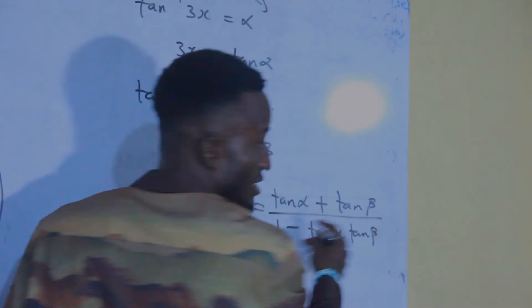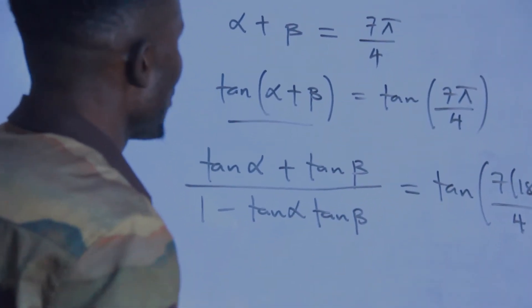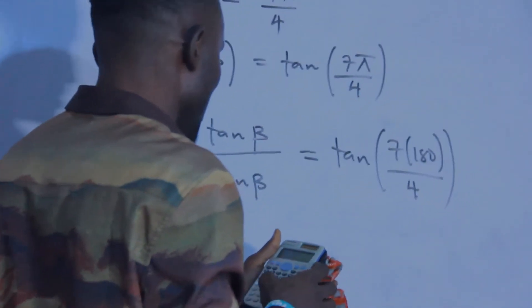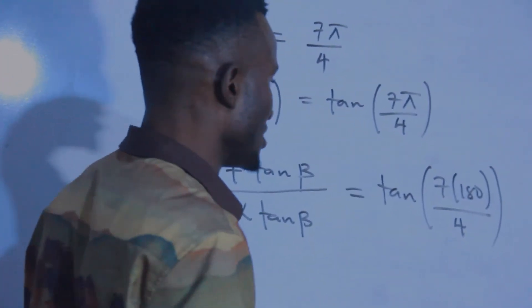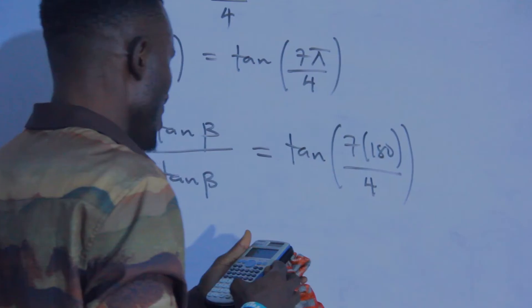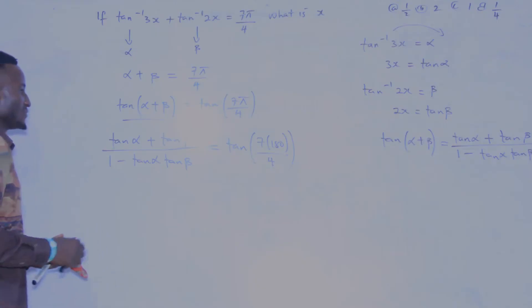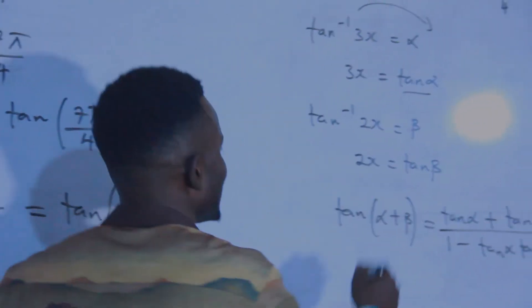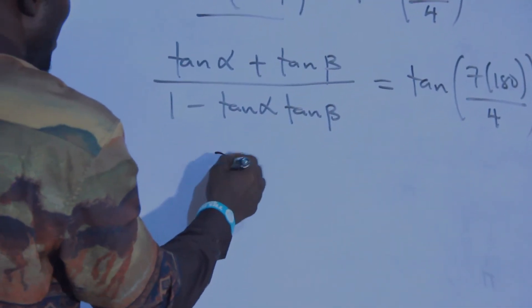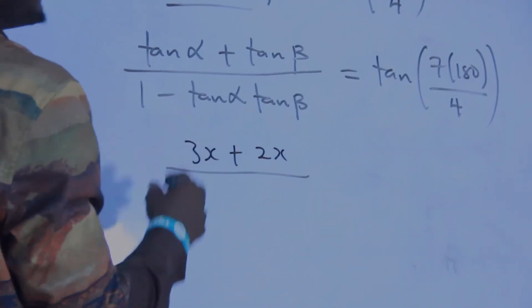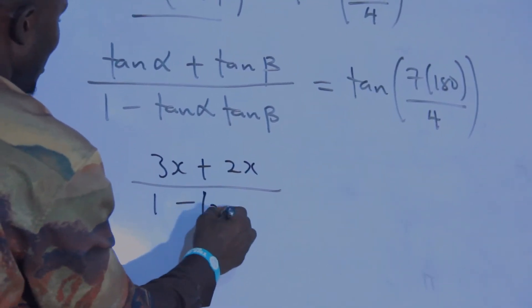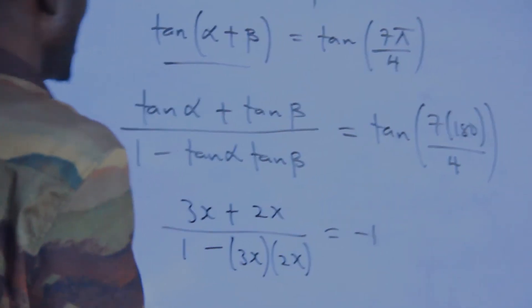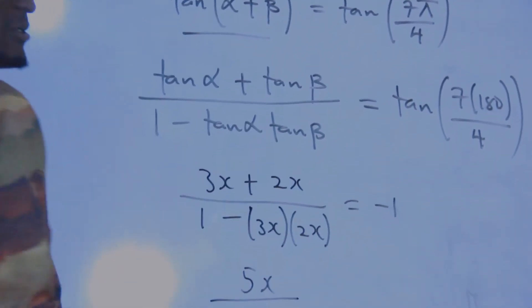Having done this, when you press the left side on the calculator, tan of 7 times 180 over 4 equals minus one. And if this equals minus one, don't forget that tan alpha is 3x and tan beta is 2x. So substituting: 3x plus 2x in the numerator, over one minus 3x times 2x in the denominator, everything equals minus one.